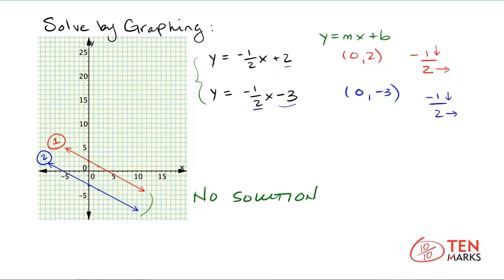You could have noticed something about these two equations before you even graphed them. The slope of the first equation is negative one-half, and the slope of the second is also negative one-half. When two equations have the same slope, the lines are parallel and they will never intersect.